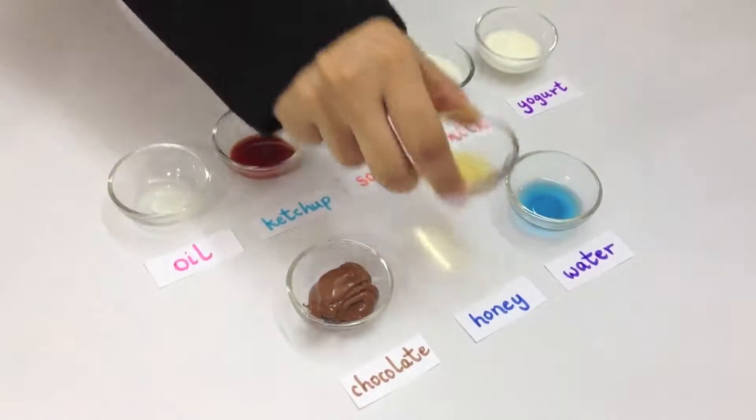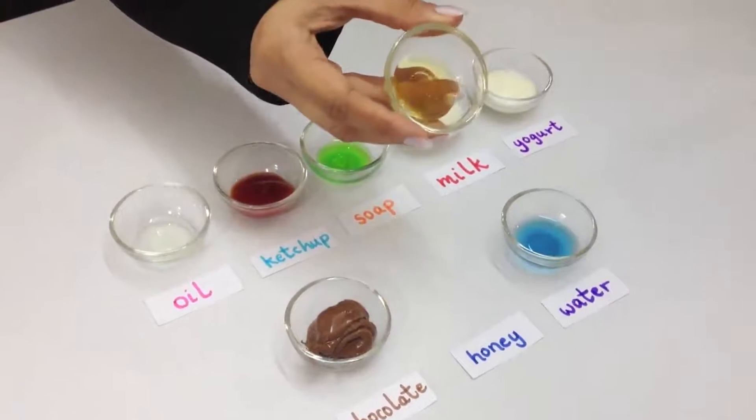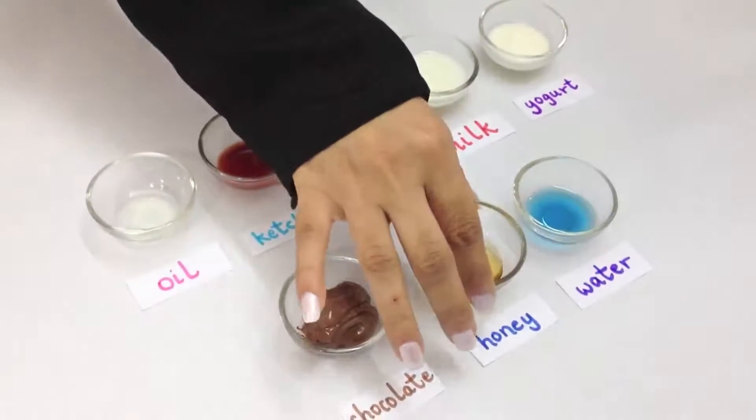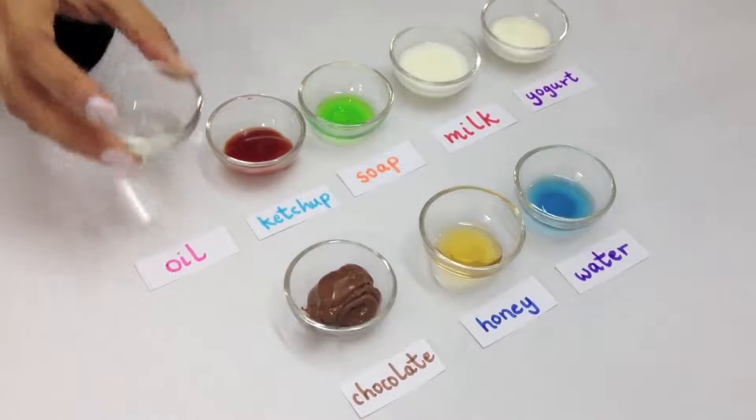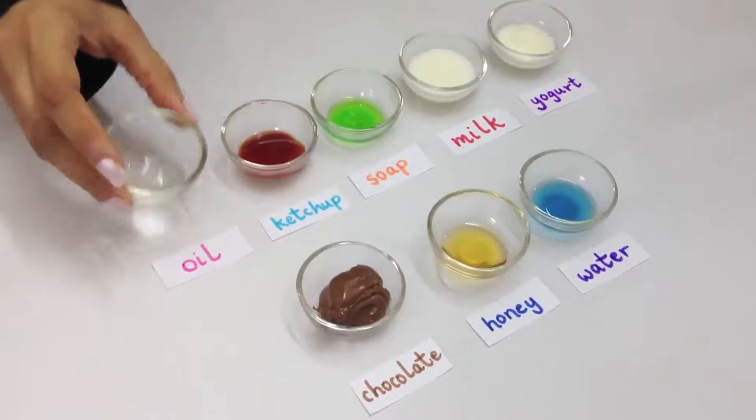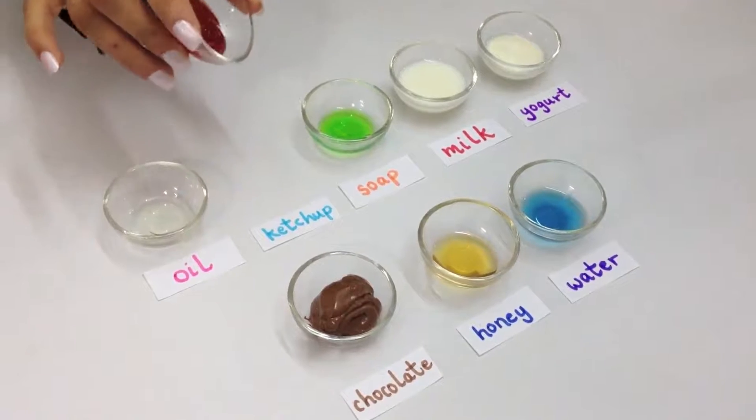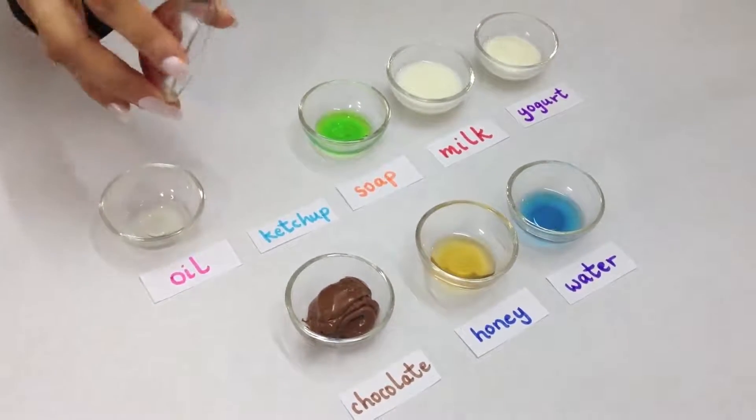We are going to learn about the different properties of liquids. You can see that liquids don't have a shape of their own. Liquids are flowy. They take the shape of the container they are put in. Ketchup is a thick liquid which is dense and not very flowy, but it is a liquid.